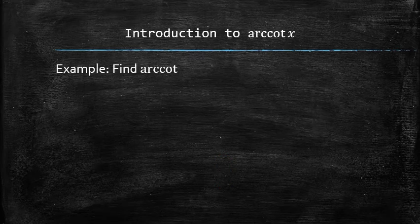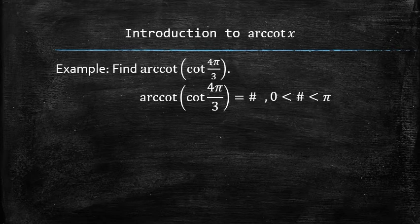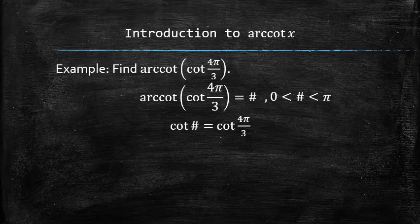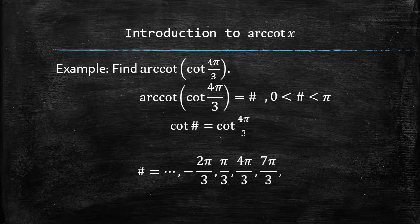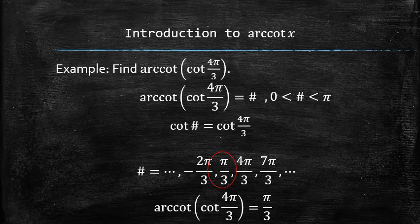Let's find the arc cotangent of the cotangent of 4 pi over 3. We are looking for some value that is between 0 and pi such that the cotangent of that value is the same as the cotangent of 4 pi over 3. There are infinitely many such values, but only one of them is in the desired interval. Therefore, the arc cotangent of the cotangent of 4 pi over 3 is pi over 3.